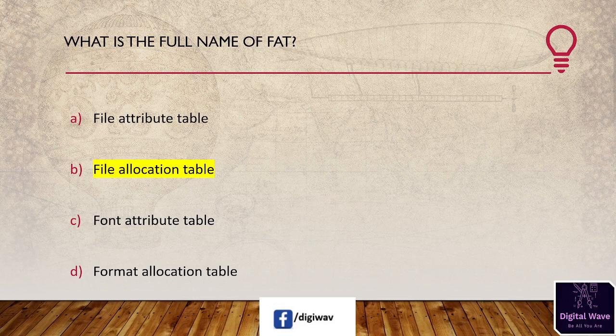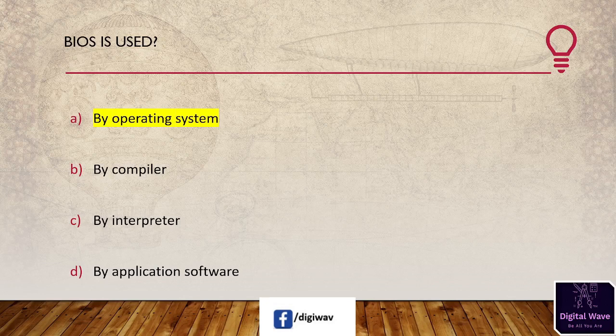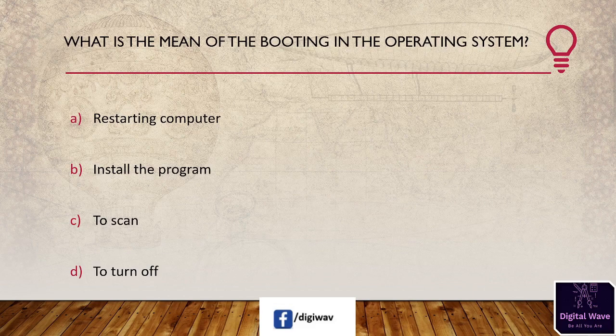Next question: BIOS is used by — first option: operating system; second: compiler; third: interpreter; last: application software. The right answer is by the operating system, because BIOS is used by the operating system and it is used to configure and identify the hardware in a system such as the hard drive, floppy drive, optical drive, CPU, and memory.